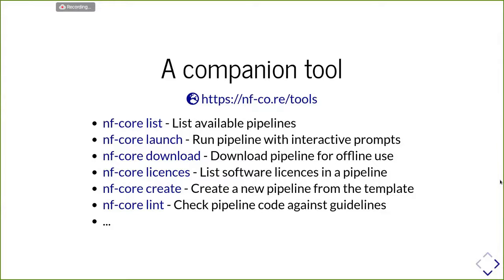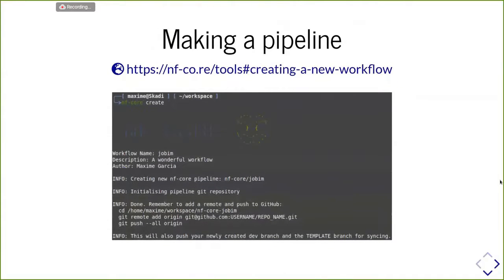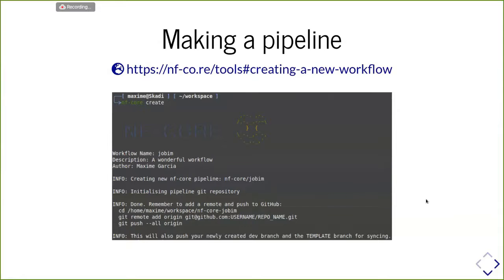You can create a new pipeline from the template and check pipeline code against guidelines. To create a new pipeline, it's actually quite simple: you just type 'nf-core create', then type the name of the pipeline, a short description, and your author name. This will create a minimal skeleton that provides at least one MultiQC process for reporting. At the moment, we are working to make it less specific to NF-Core to also help the whole Nextflow community.